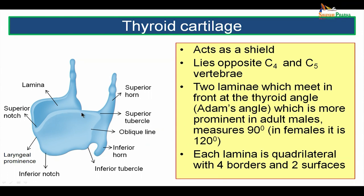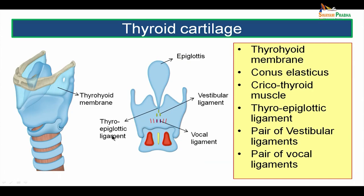Posteriorly the superior border ends at the superior tubercle and then continues upwards as the superior horn of the thyroid cartilage. Similarly, the inferior border ends in the inferior tubercle and then continues downwards as the inferior horn. The inferior horn and superior horn are connected to each other by the posterior border of the lamina. Also seen on the outer surface of the lamina is an oblique running line which runs downwards and forwards. The thyroid cartilage is connected to the hyoid bone by the thyrohyoid membrane. The superior border of the thyroid cartilage is attached to the lower border of the hyoid bone by the thyrohyoid membrane, and the posterior border of this thyrohyoid membrane is thickened to form the thyrohyoid ligament.